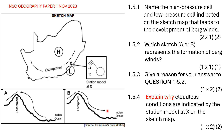Question 1.5.3 says give a reason for your answer to question 1.5.2 — in other words, give a reason as to why you chose sketch B. The reason lies in the fact that bergwinds develop over the interior of South Africa. They blow across the escarpment down the mountain slopes towards the coastline. So in sketch B, the wind originates over the interior and blows down towards the coastline.